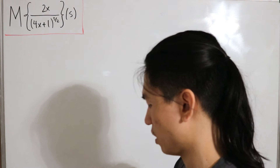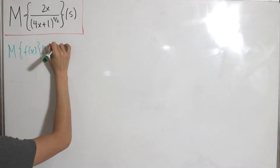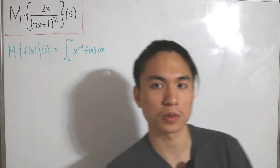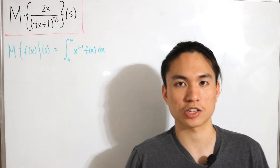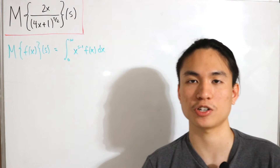The formula is written as follows: the Mellin transform of some function f(x) with input s is the integral from zero to infinity of x to the power (s minus 1) times f(x) dx. We just need to plug in our function and calculate from there. As we go through the procedure, there will be other formulas involved, mainly the beta and gamma functions and their properties.